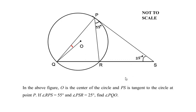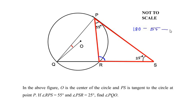To begin with, let us consider triangle PRS. In this triangle, angle P is given and angle S is given, so let us find angle R using the angle sum property of the triangle. We can write it as 180 degrees minus 55 minus 25, which gives us angle R as 100 degrees.